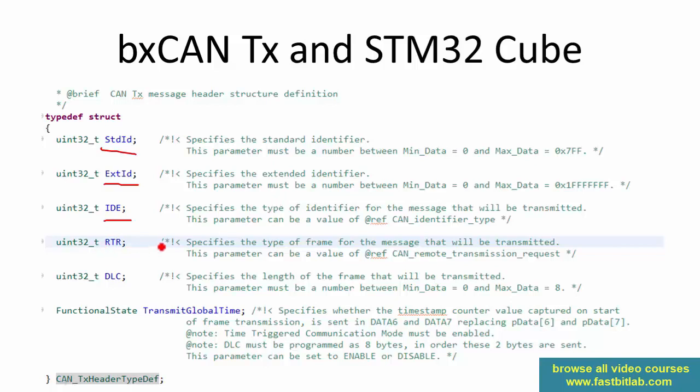RTR decides whether you are trying to send a data frame or a request frame. DLC is the payload length. Note that this structure doesn't have any field for data — data you can give as an external buffer, which we'll see later.